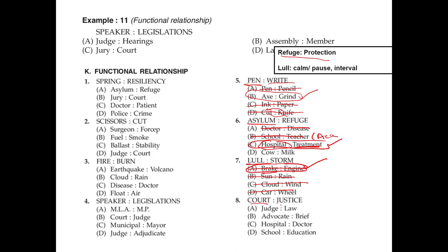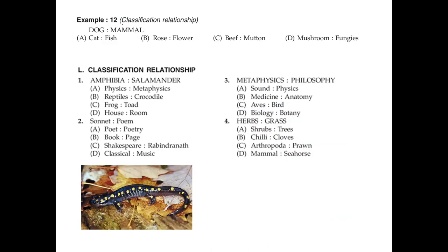Court is a place where justice takes place. If court is a place, then on the answer side we must find an environment, place, or institute. A judge is a person — cut that out. An advocate is also a person. Hospital and school are places or institutes. What happens in court? Justice. What happens in a hospital? Treatment, not doctor. What happens in school? You get education. So school and education is the right answer.